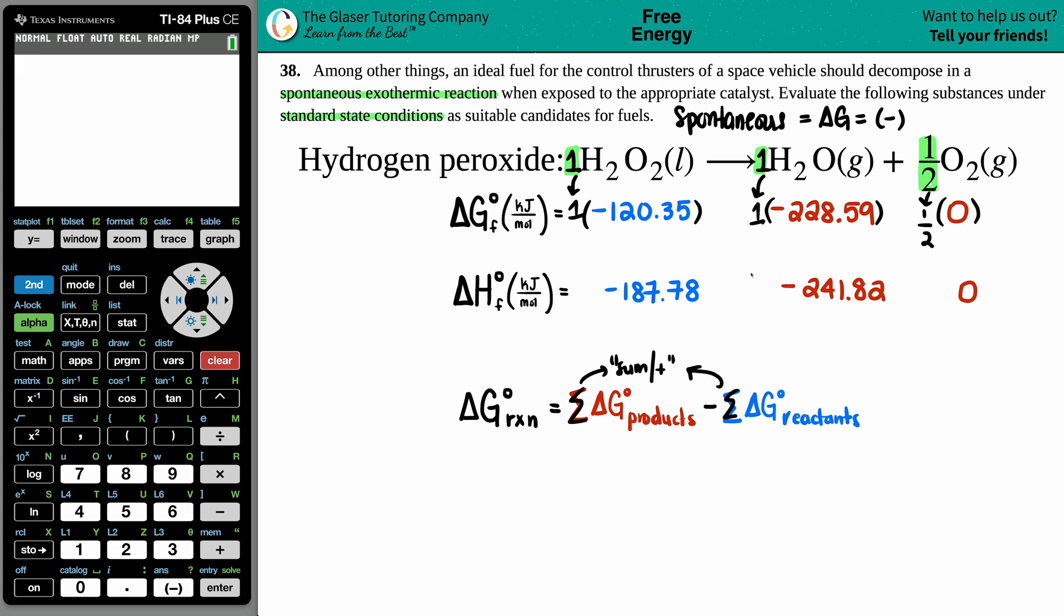Now we just have to sum them up. In this case you have two products, it's literally H₂O plus the O₂ gas. So it'd be this value plus this value, but one times a negative 228.59 plus zero would be the negative 228.59. So that's the number for the right side. And one times a negative 120.35 is a negative 120.35. So now we have our summed up values that we're going to use in our equation.